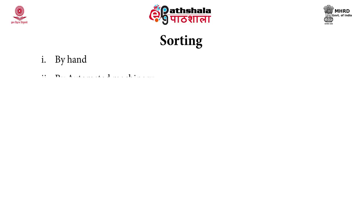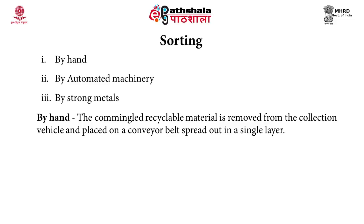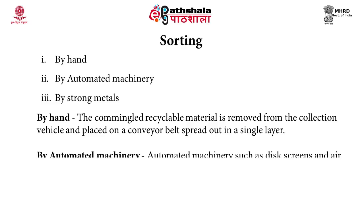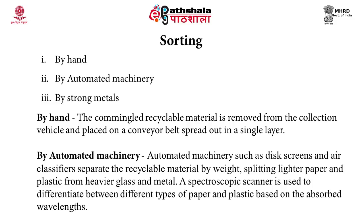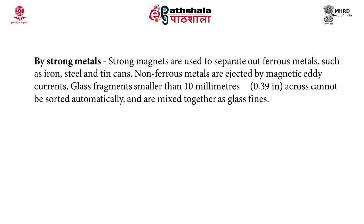The second step in recycling is sorting. Sorting can be done manually by hand or using automated machinery or strong magnets. Co-mingled recyclable materials are removed from the collection vehicle, spread on a conveyor belt, and sorted manually or using automated machinery like disc screens and air classifiers. These separate recyclable materials by weight, splitting lighter paper and plastic from heavier glass and metal. Spectroscopic scanners can differentiate between types of paper and plastic based on absorbed wavelengths. Strong magnets separate ferrous metals such as iron, steel and tin cans. Non-ferrous metals are ejected by magnetic eddy currents, and glass fragments in the 10 mm size range are sorted automatically and mixed together as glass fines.